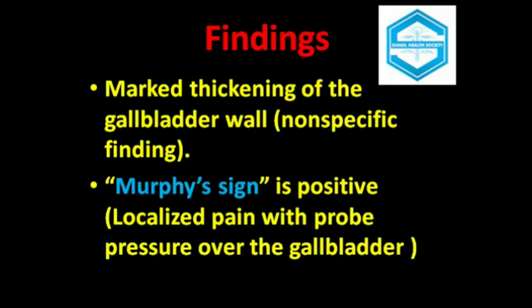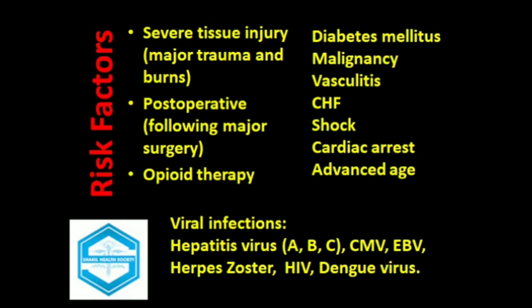The thickening of the gallbladder wall is a non-specific sign. In this patient, there was localized pain which is increased with pressure over the gallbladder fossa, and that is called Murphy's sign. Murphy's sign is considered positive, and this was labeled as a case of acalculous cholecystitis.